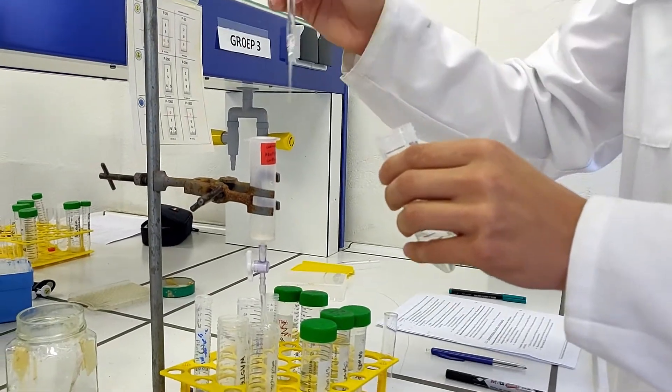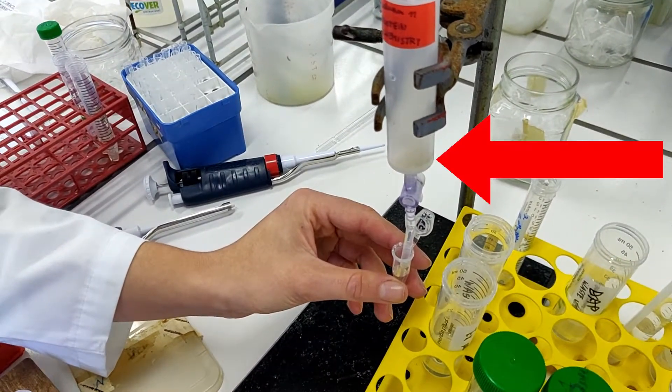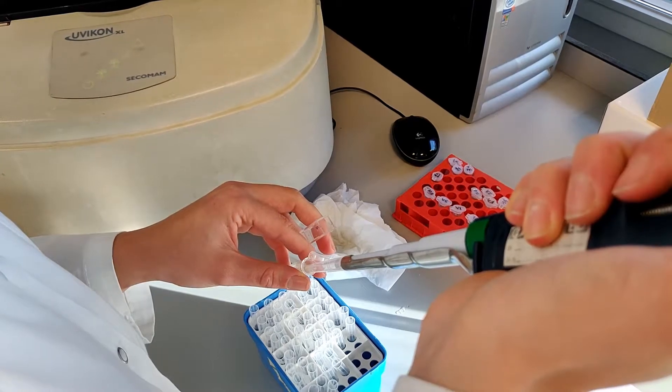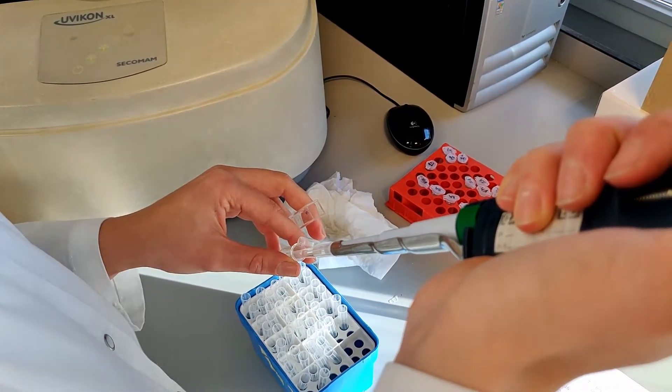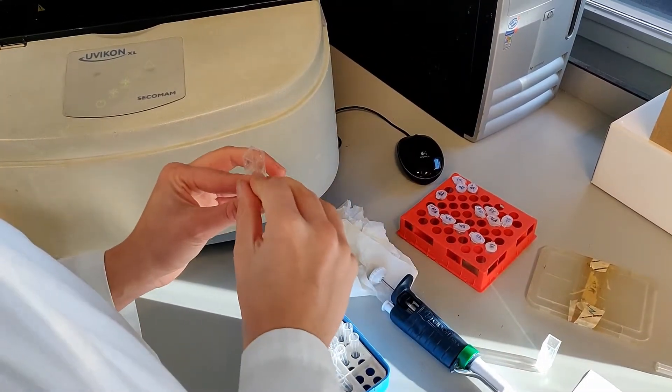The crude lectin solution is applied to the column, and a flow-through is collected. The lectin should now be bound to the matrix on the column. From the flow-through, the OD value was measured at three time points. The OD, or optical density, or in other words, the turbidity of the solution,